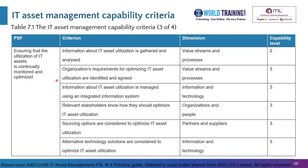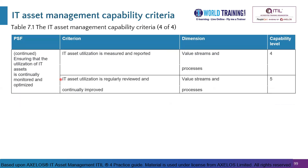The next PSF is 'ensuring that the utilization of IT assets is continually monitored and optimized.' At Level 2, information about IT asset utilization is gathered and analyzed. At Level 3, there are several entries: the organization's requirements for optimizing IT asset utilization are identified and agreed; information about utilization is managed using an integrated information system; relevant stakeholders know how they should optimize IT asset utilization; sourcing options are considered; and alternative technology solutions are considered. At Level 4, IT asset utilization is measured and reported. At Level 5, utilization is regularly reviewed and continually improved.